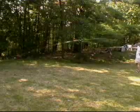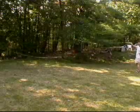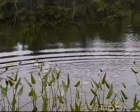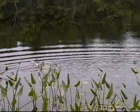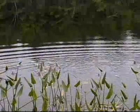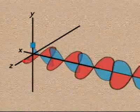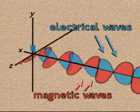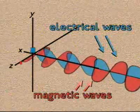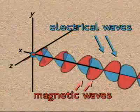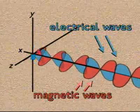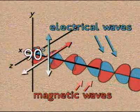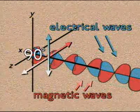If transverse waves were visible, they would look something like the waves in this rope or the ripples on the surface of a pond. This animation of an electromagnetic wave shows the electrical and magnetic components of the wave. The two parts of the waves are at right angles to each other.